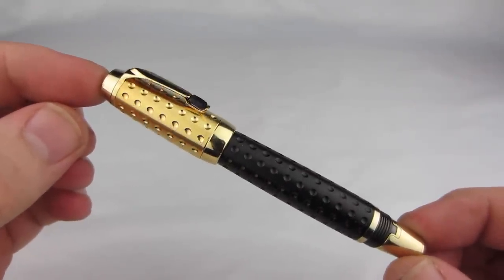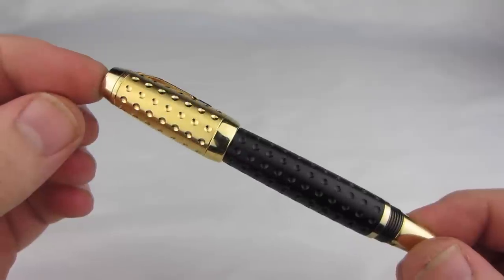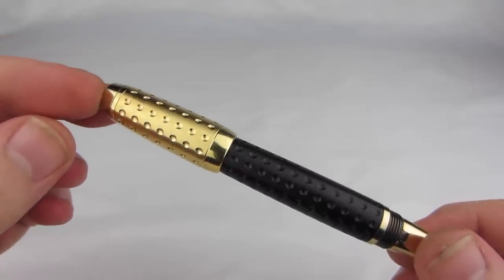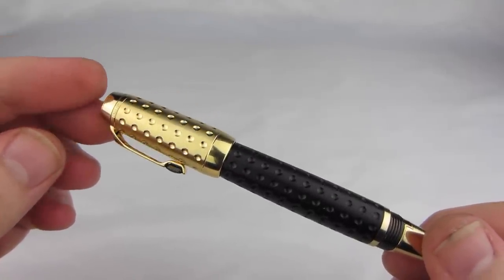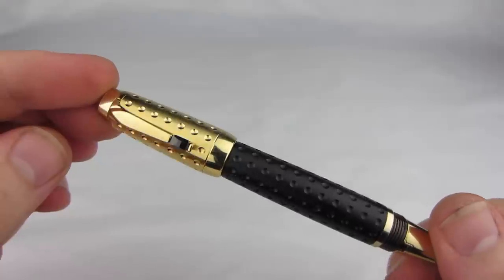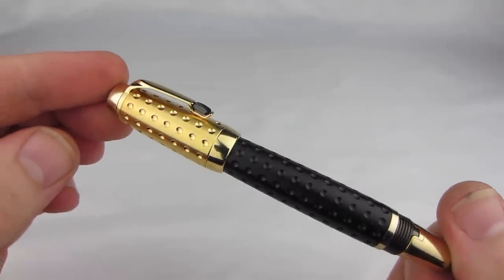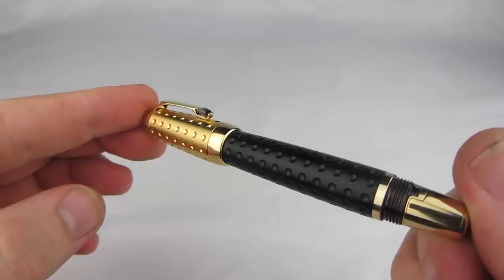The primary design element on this Boheme are the dimples that run the full length of the cap and barrel, and the ostentatious use of gold plating. I actually like the effect the dimples create, and I usually don't mind so much gold plating, but here it just seems a bit much.